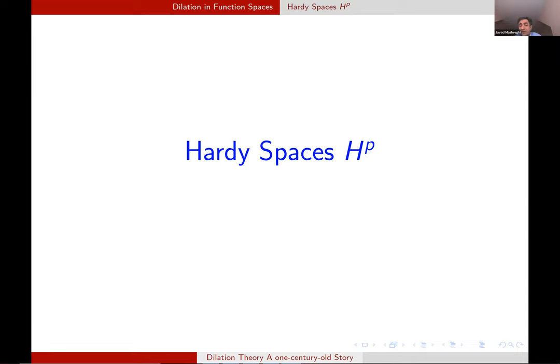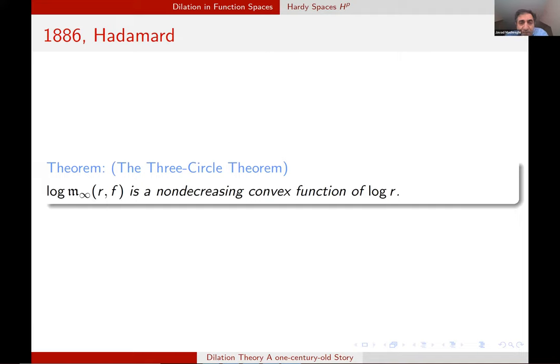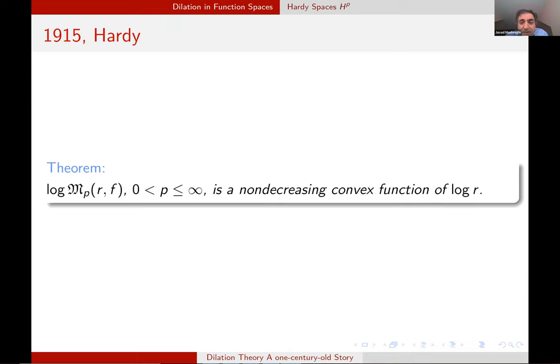So we start with the classical Hardy space, H^p. And then I believe everybody in the audience is familiar with the definition. We consider this integral means, which can be written in terms of dilation too. So it's an L^p norm of F_R. It depends on R, of course. The classical three circle of Hadamard says that log of M_infinity is a convex function of log R, being a non-decreasing simple consequence of maximal principle. The main message is here, convexity with respect to log R. And Landau asked if it can be extended to other values of p. And Hardy did this. He showed that log of M_p has the same property. And experts like Peter Duren believe that this is the first theorem in the theory of Hardy spaces.